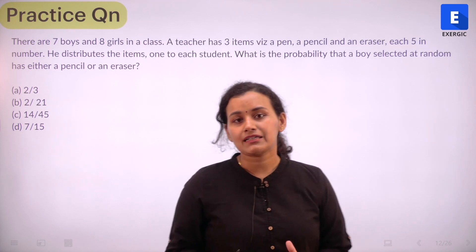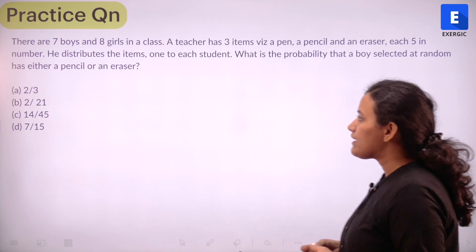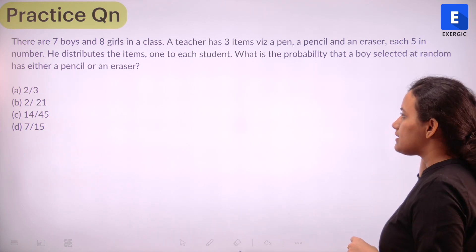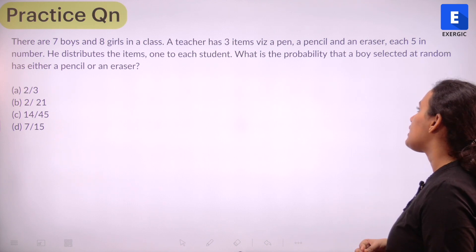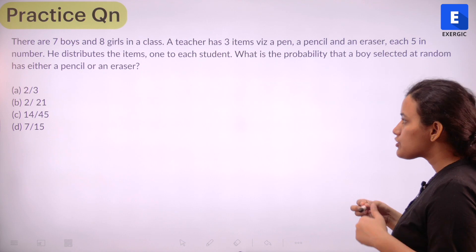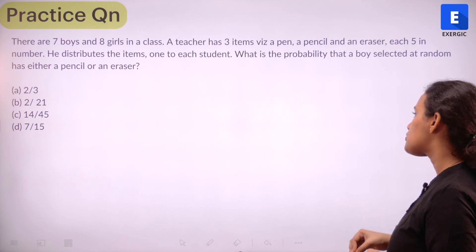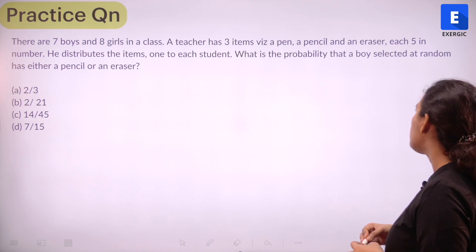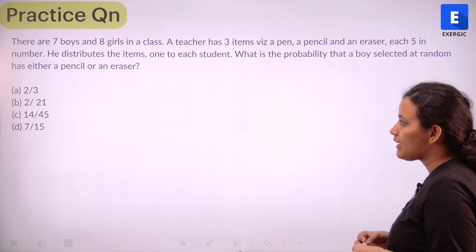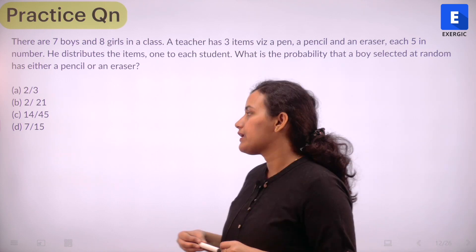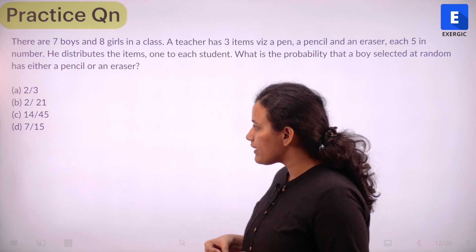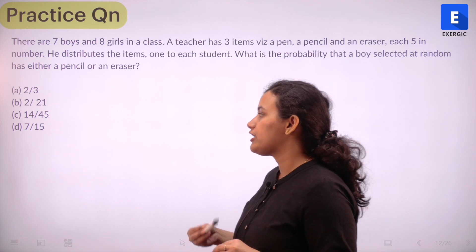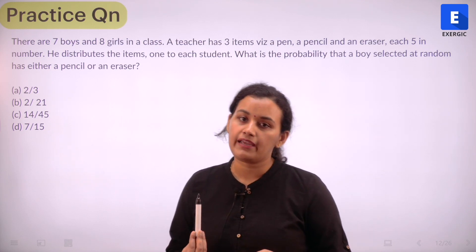Let's look at the practice question for you. There are 7 boys and 8 girls in a class. A teacher has 3 items that is a pen, pencil and eraser, each 5 in number. He distributes the items 1 to each student. What is the probability that a boy selected at random has either a pencil or an eraser? The options are 2 by 3, 2 by 21, 14 by 45 and 7 by 15.